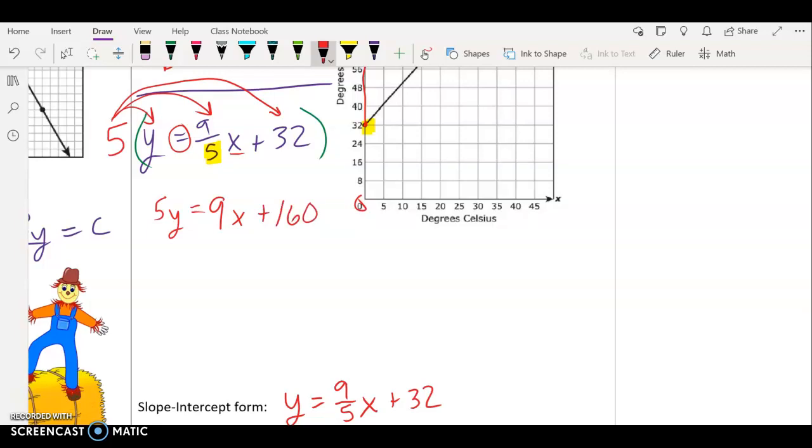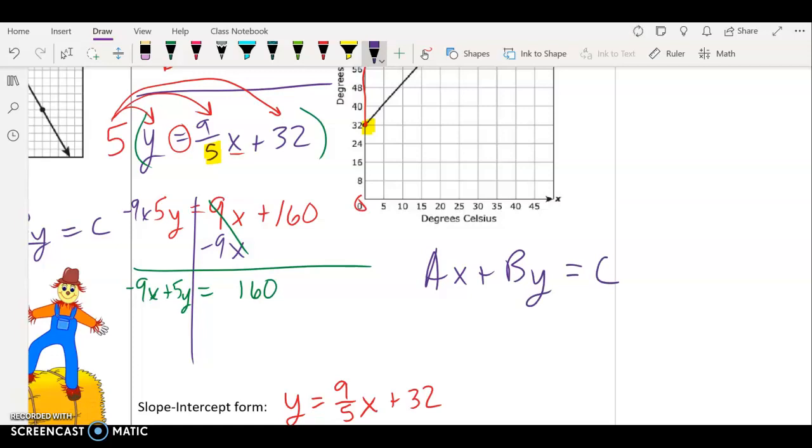And lastly, five times 32. And if that's too big, you can always type it in your calculator. It's 160. Okay, so next step: remember the x and the y have to be on the same side, so I'm subtracting 9x on both sides. What does that look like? Let's see: 9x minus 9x is zero. On this side we have 160. On this side we have negative 9x, and that's a positive 5y, so let's put a plus. Are we finished? Is that standard form?